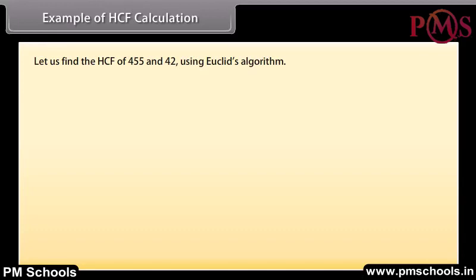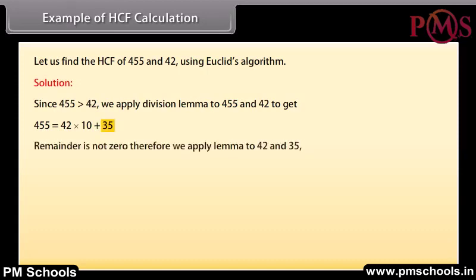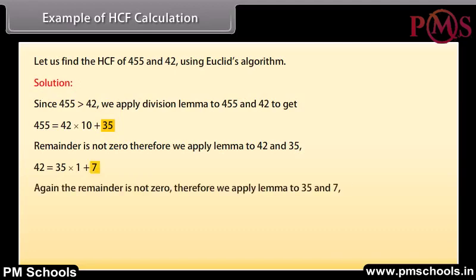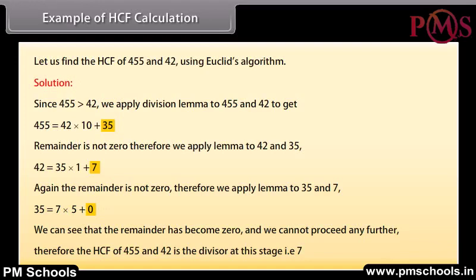Example: Let us find the HCF of 455 and 42 using Euclid's algorithm. Since 455 is greater than 42, we apply the division lemma to get: 455 equals 42 into 10 plus 35. Since the remainder is not 0, we apply the lemma to 42 and 35: 42 equals 35 into 1 plus 7. Again not 0, so we apply it to 35 and 7: 35 equals 7 into 5 plus 0. The remainder is now 0, so the HCF of 455 and 42 is 7.